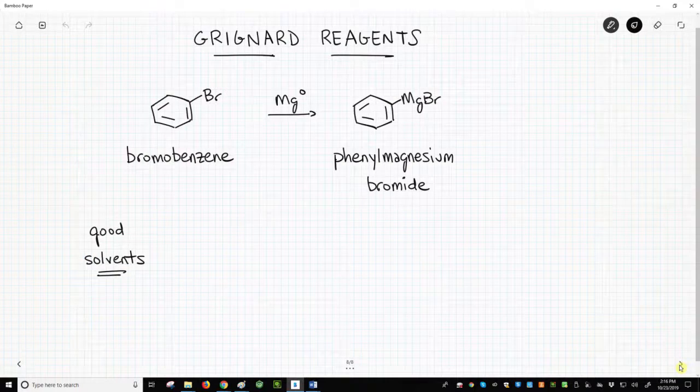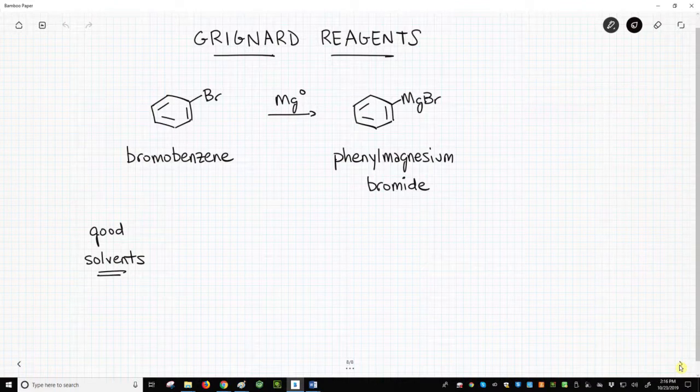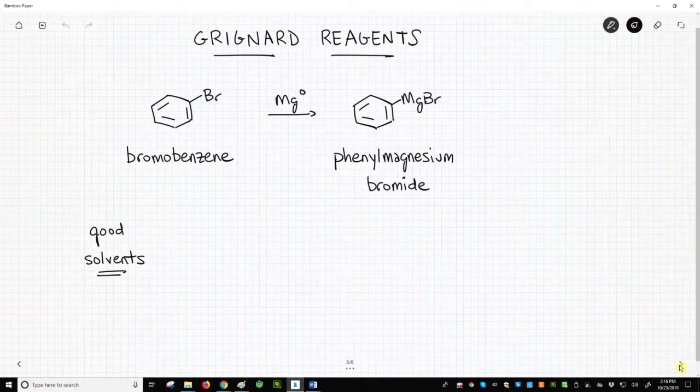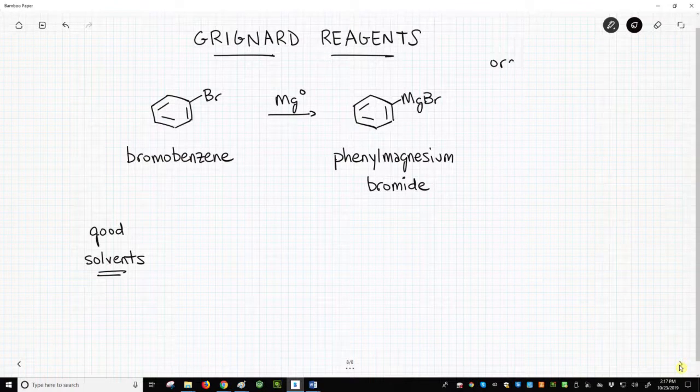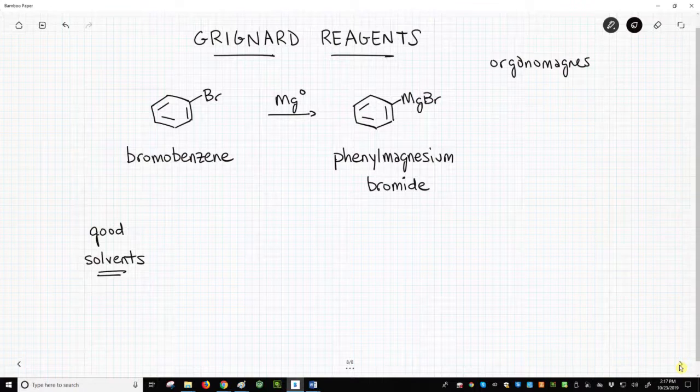Grignard reagents are named after Francois Grignard, the scientist who first discovered this class of organometallic reagents. Grignard reagents specifically involve magnesium as the metal. They are also called organomagnesium reagents.